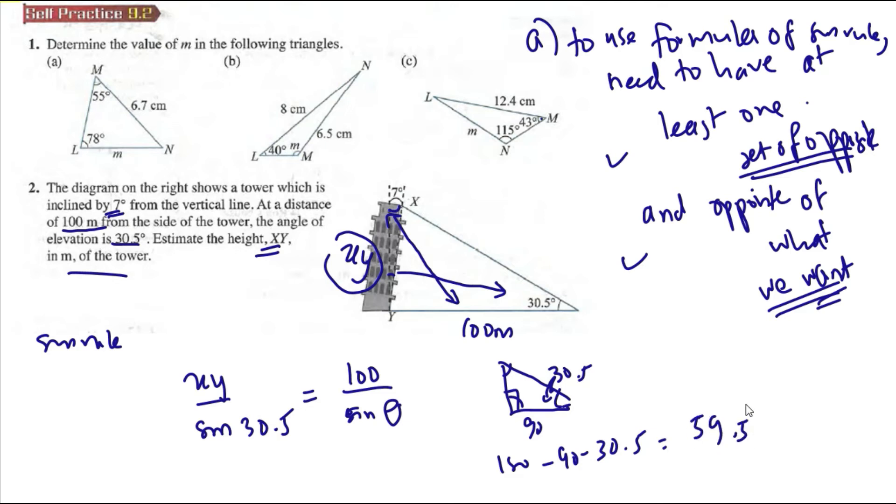You can see here, this one is 59.5. But you can see it is inclined by 7%, so we need to add an additional 7. So theta is equal to 59.5 plus 7, which is equal to 66.5.